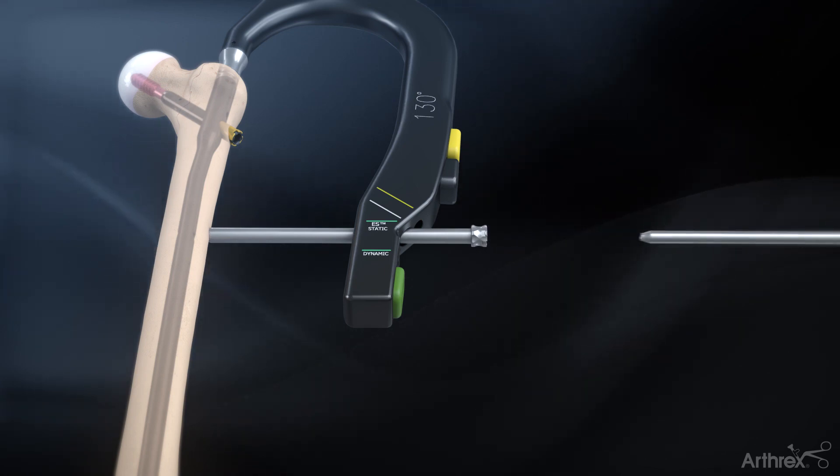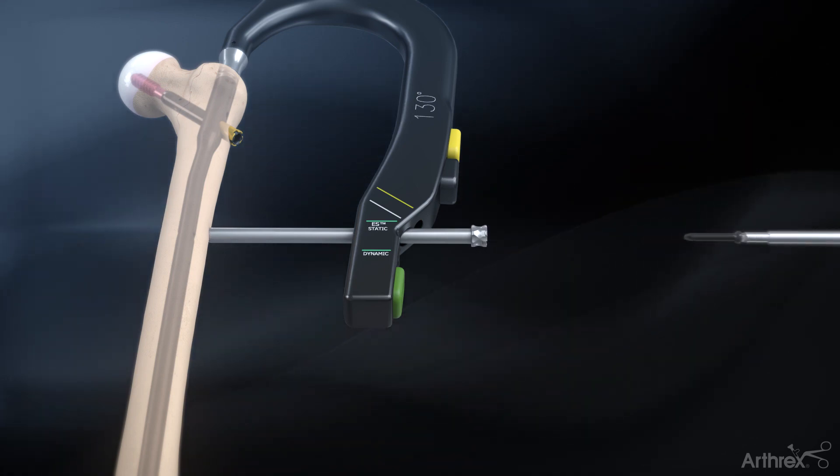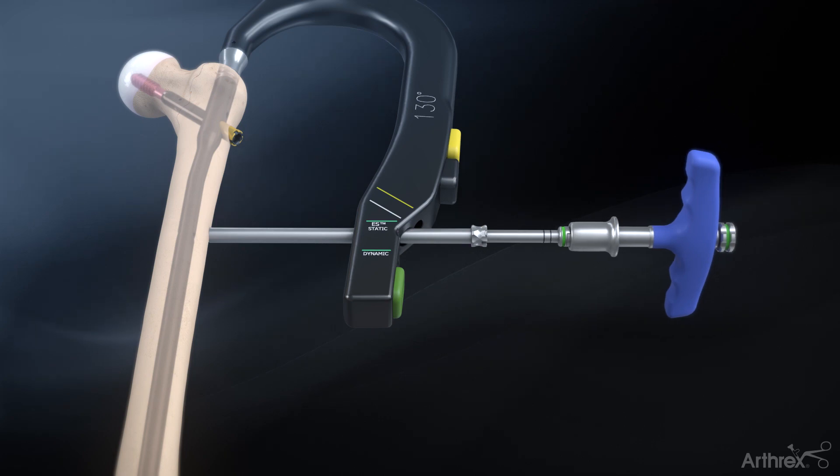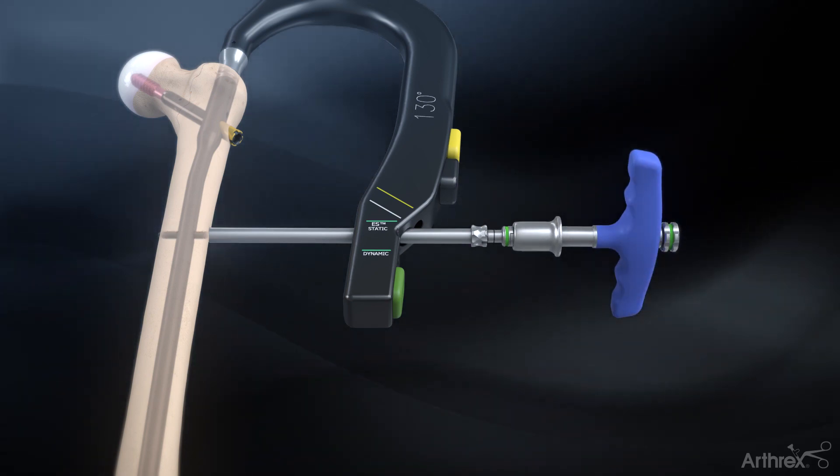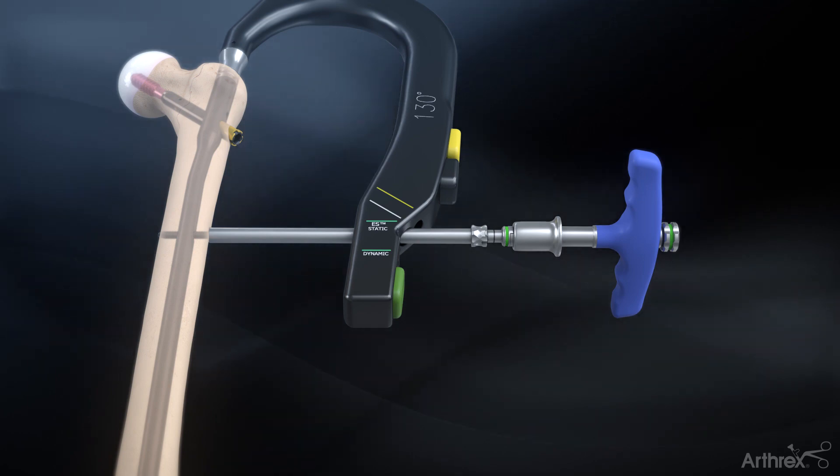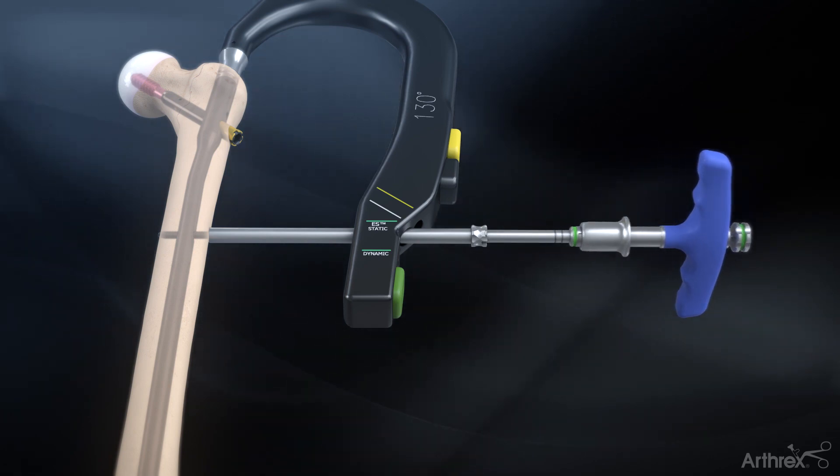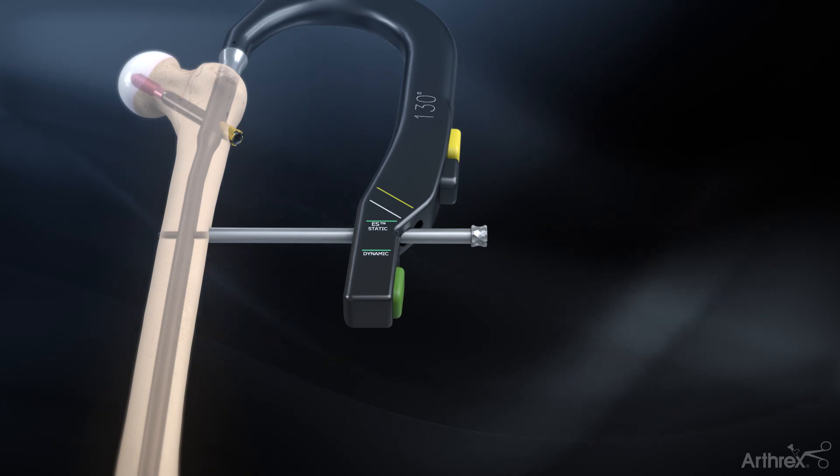Remove the distal drill guide and insert the 5.0 mm captured screw with the 5.0 mm hex driver. When the first laser mark reaches the sheath, the bottom of the screw head has reached the other end of the sheath. Unscrew the capturing rod in the hex driver and remove the driver assembly.